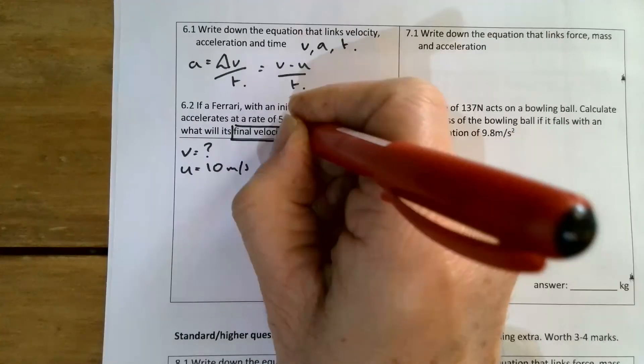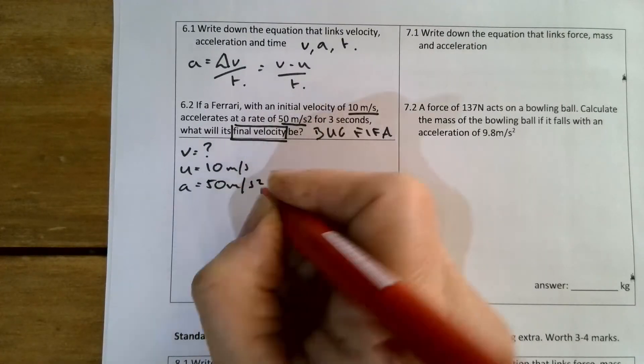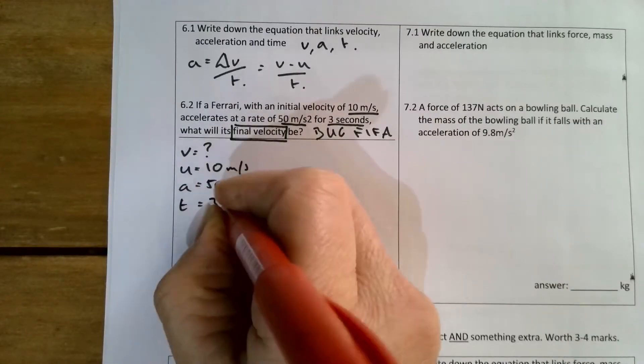Accelerates at a rate of 50 meters per second squared, so a equals 50 meters per second squared, and time is three seconds, so t equals three seconds.